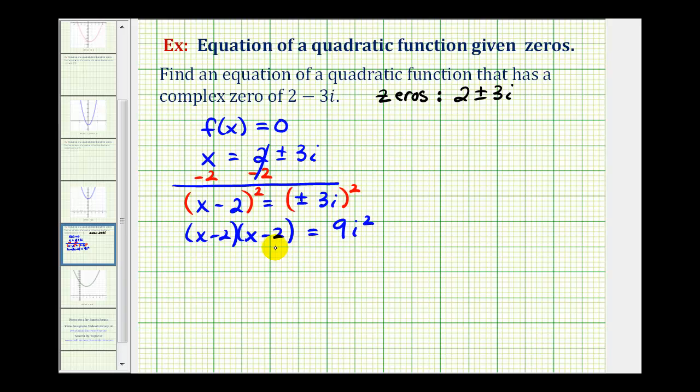Now we'll go ahead and multiply out the left side and then also since i squared equals negative 1 we'll substitute negative 1 here. So we're going to have one, two, three, four products. So we have x squared minus 2x and then another minus 2x so that's minus 4x plus 4 equals 9 times negative 1.